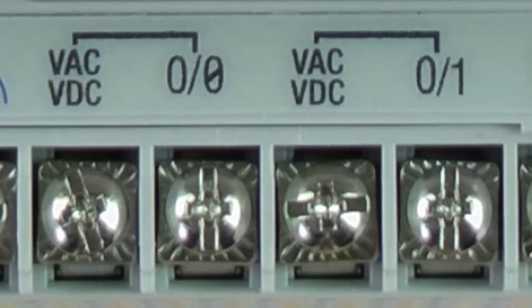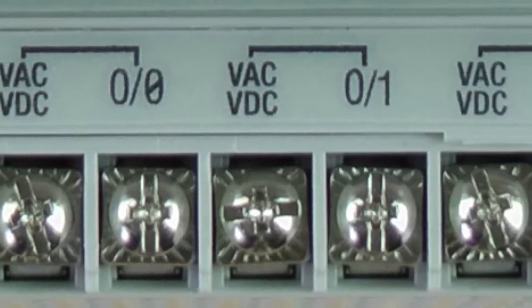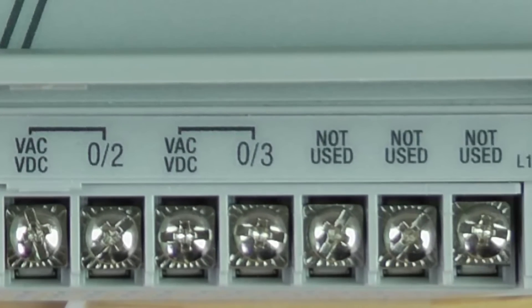This means that output zero could be a different voltage source than output one because they're totally isolated relay circuits. As we look at the rest of the outputs, we'll notice that they're all isolated. So each one of the four outputs on this model is an isolated relay.